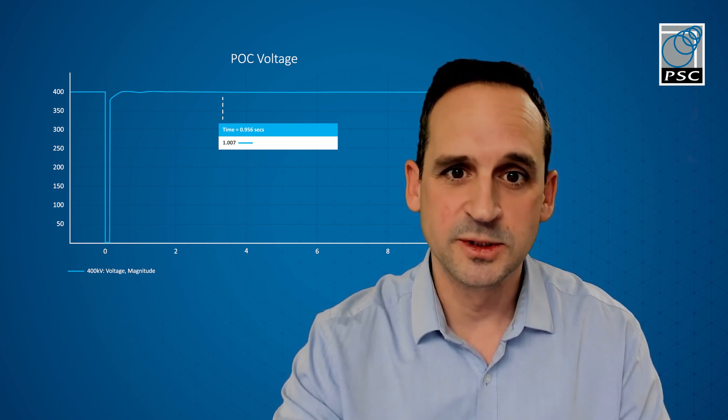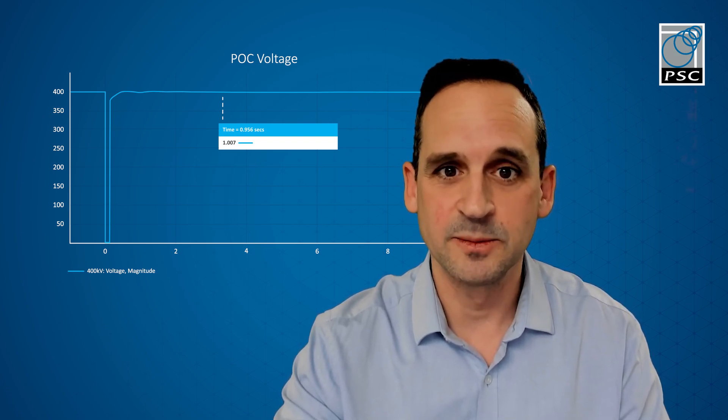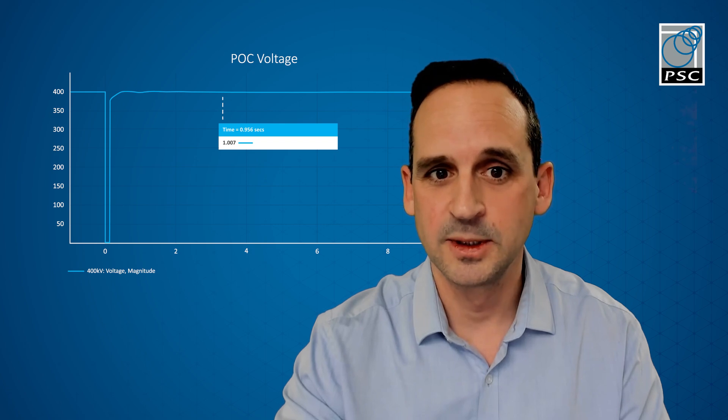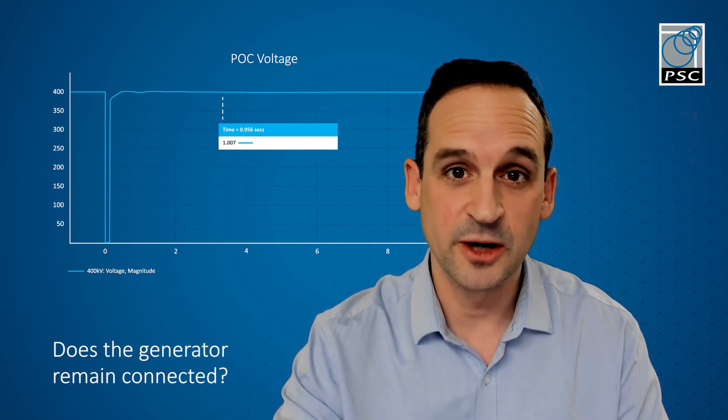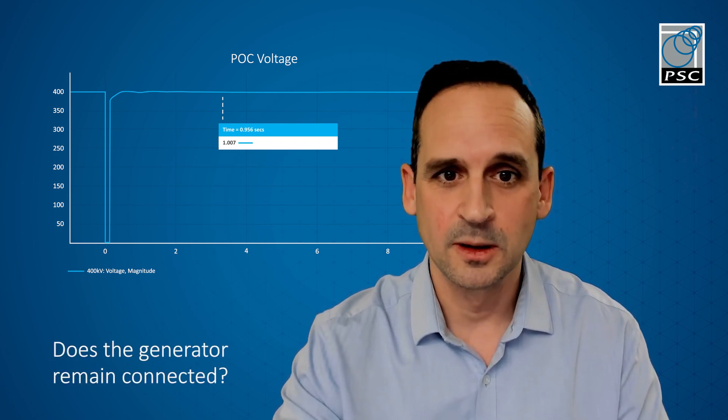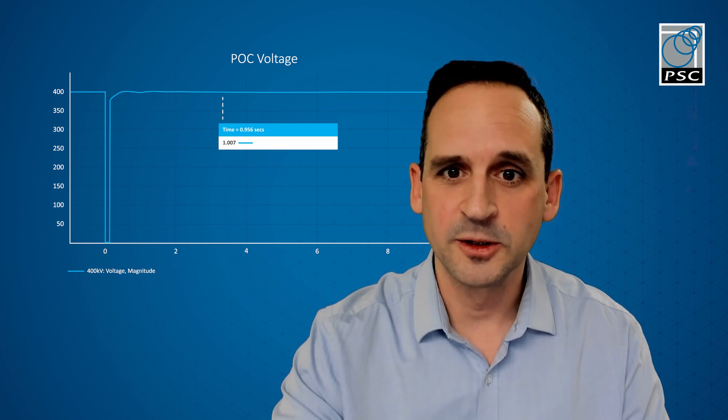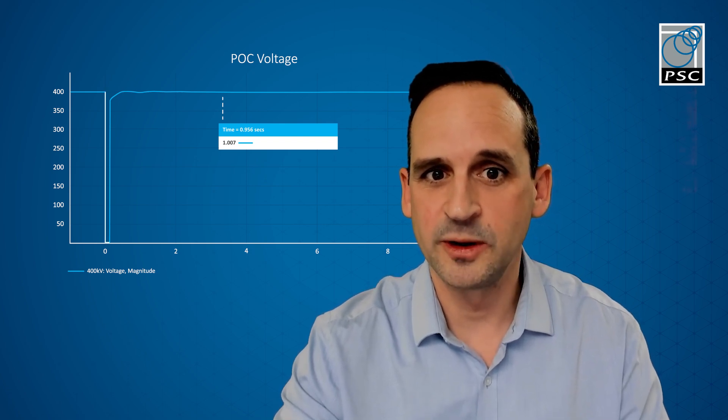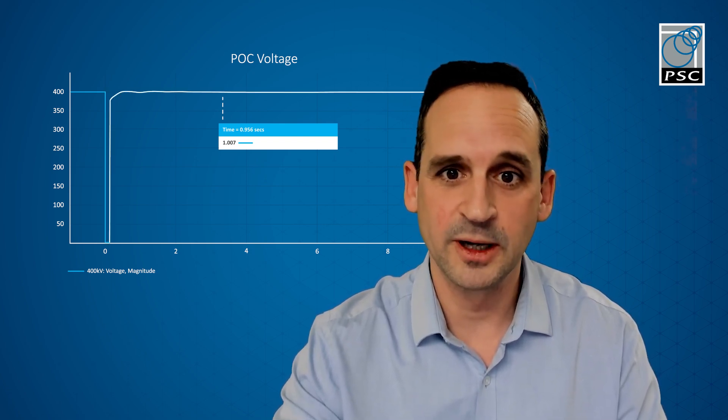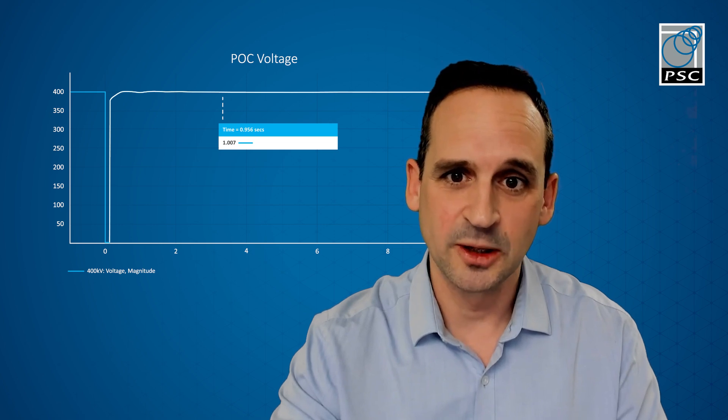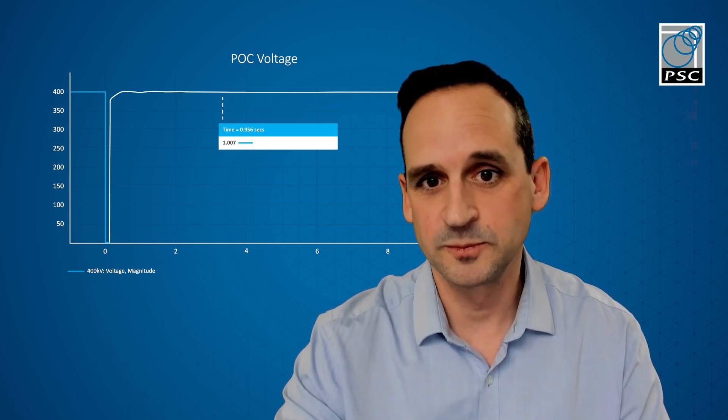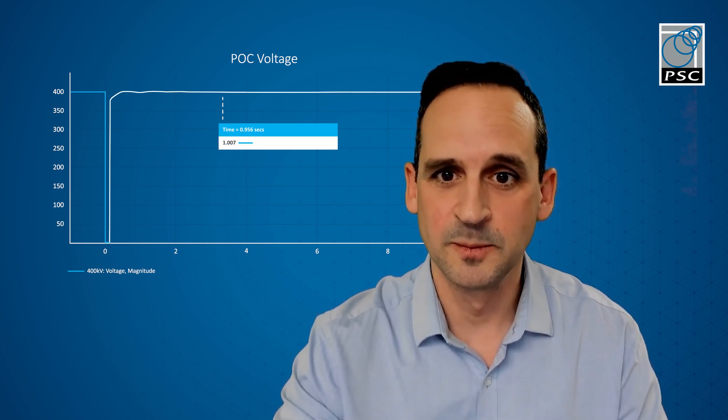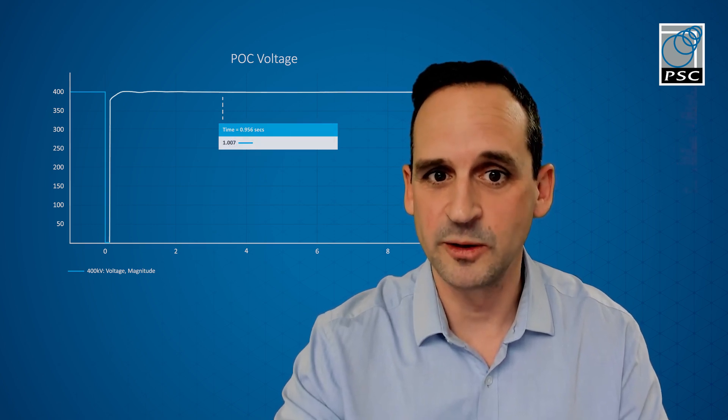If we look at these outputs from DigSILENT, we can check if it meets these three requirements. Firstly, does the generator remain connected? If we look at the generator voltage here, we can see that it drops during the fault and recovers following the fault clearance. You can see some initial overshoot due to the generator speeding up slightly, but the voltage settles down because the generator remains in synchronicity with the grid.